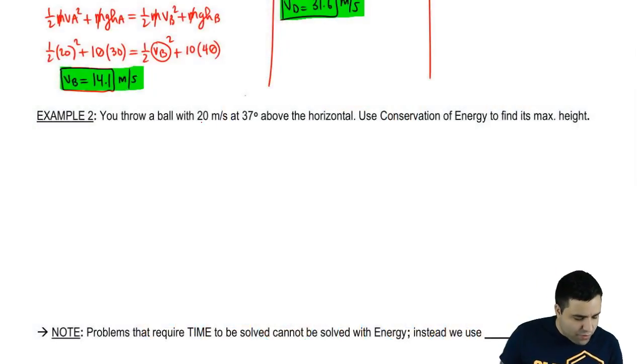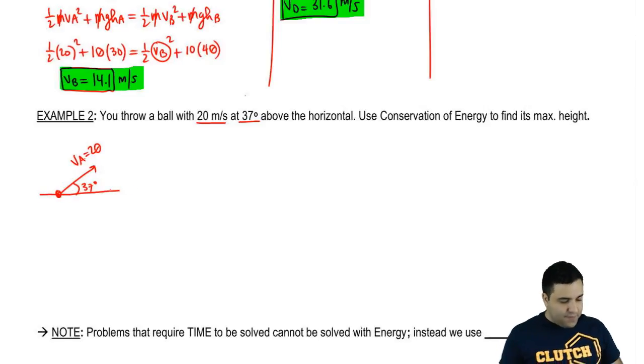All right, so in this example we have a ball that we're throwing with 20 meters per second at 37 degrees above the horizontal. So let's draw this real quick. Throwing it this way, I'm going to call this VA = 20, and it makes an angle of 37 degrees above the horizontal, above the x-axis like that.